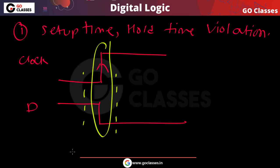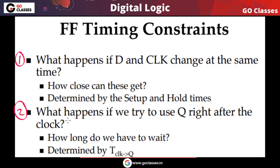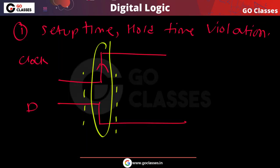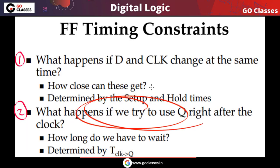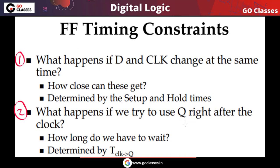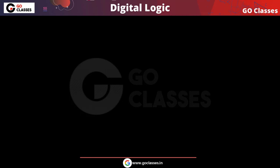Next, what happens if we try to use output Q just after the clock? In this second situation, you will get an unstable or invalid output, because of propagation delay. Since there is a propagation delay, you will be using the wrong output — you will be getting invalid output.